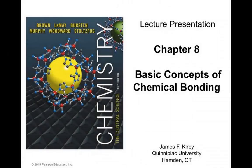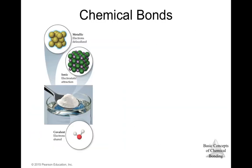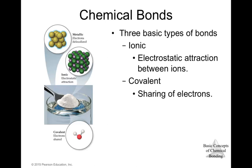This is Chapter 8: Basic Concepts of Chemical Bonding. Whenever two atoms or ions are strongly held together, we say that there is a chemical bond between them. There are three general types of chemical bonds: the ionic, the covalent, and the metallic.